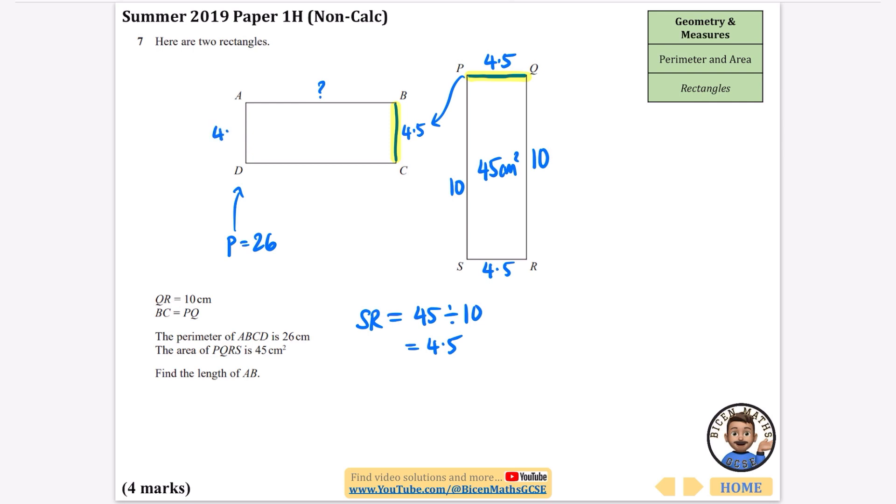Because this is 4.5, this length over here is going to be 4.5 and the opposite is 4.5 as well. If I call the top one x, then the bottom is x. The perimeter is 26, so 4.5 plus 4.5 plus 2x equals 26. That's 9 plus 2x equals 26, so 2x equals 17.